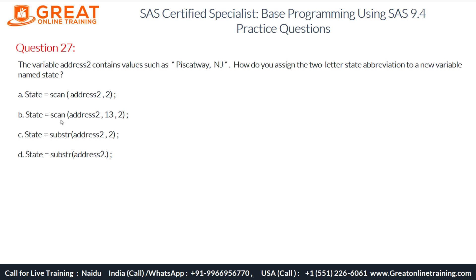However, if we were using a SUBSTR function instead of SCAN, then address2 comma 13 would make sense. Counting character positions: P-i-s-c-a-t-a-w-a-y is 10 characters, then a comma and space make positions 11 and 12, so position 13 is the character 'N'. With SUBSTR, address2 comma 13 comma 2 would extract 'NJ' — two characters starting at position 13. But the option uses SCAN, not SUBSTR, so it is wrong.